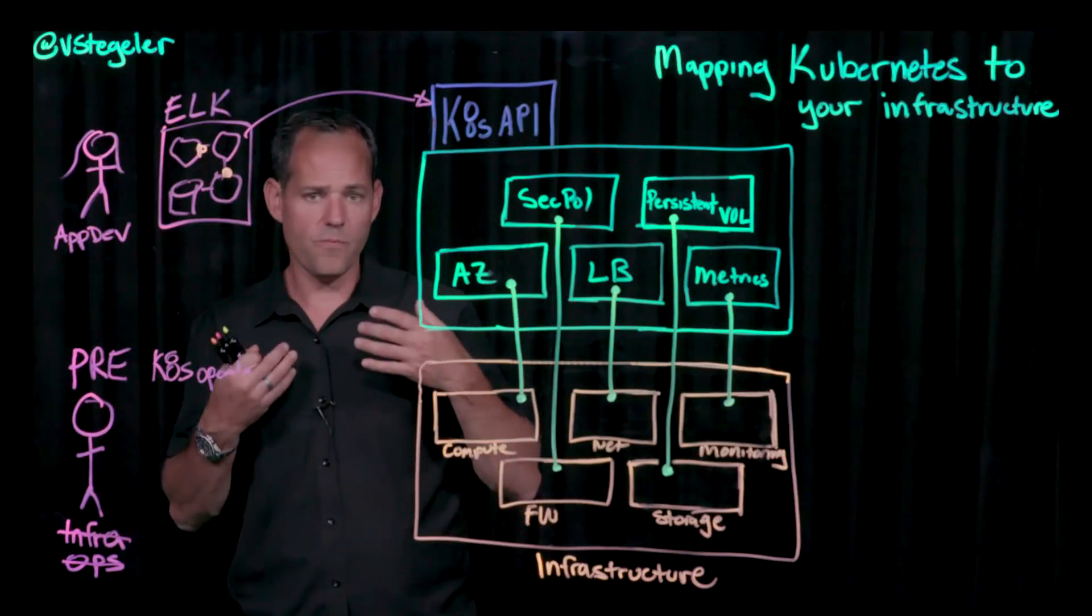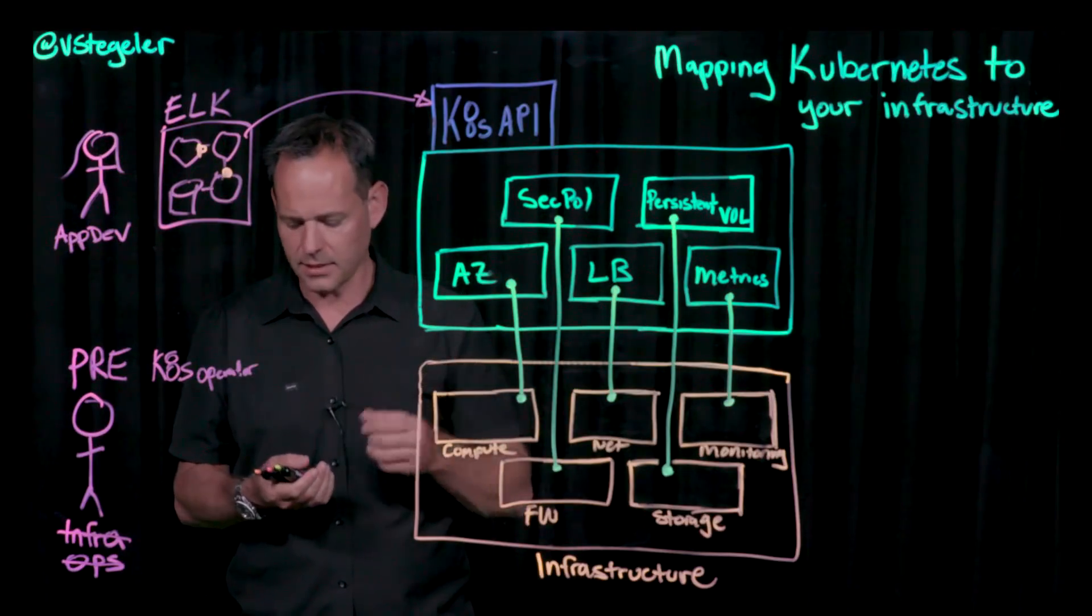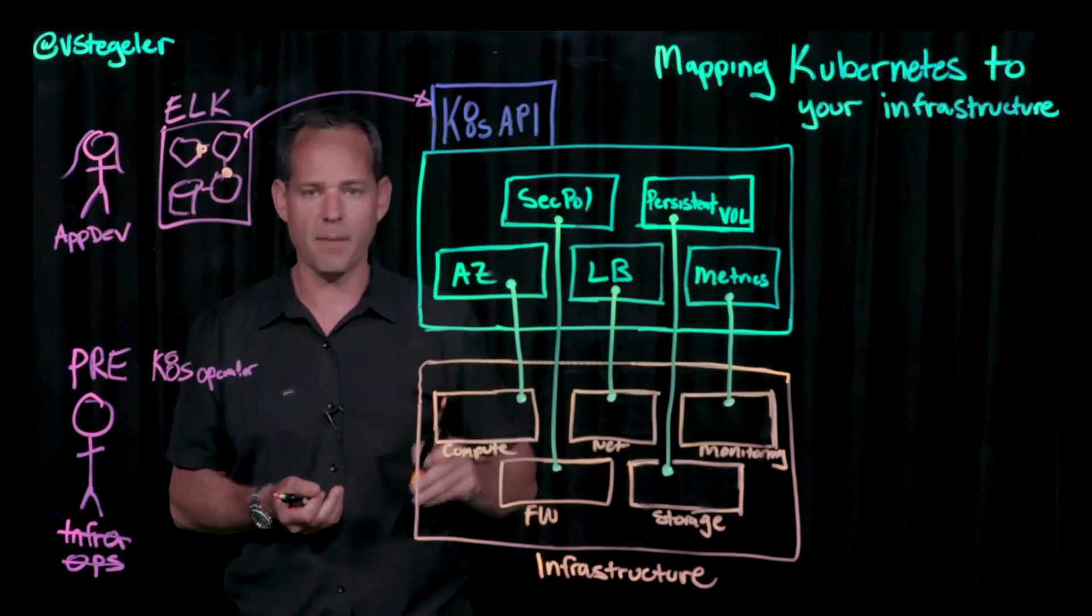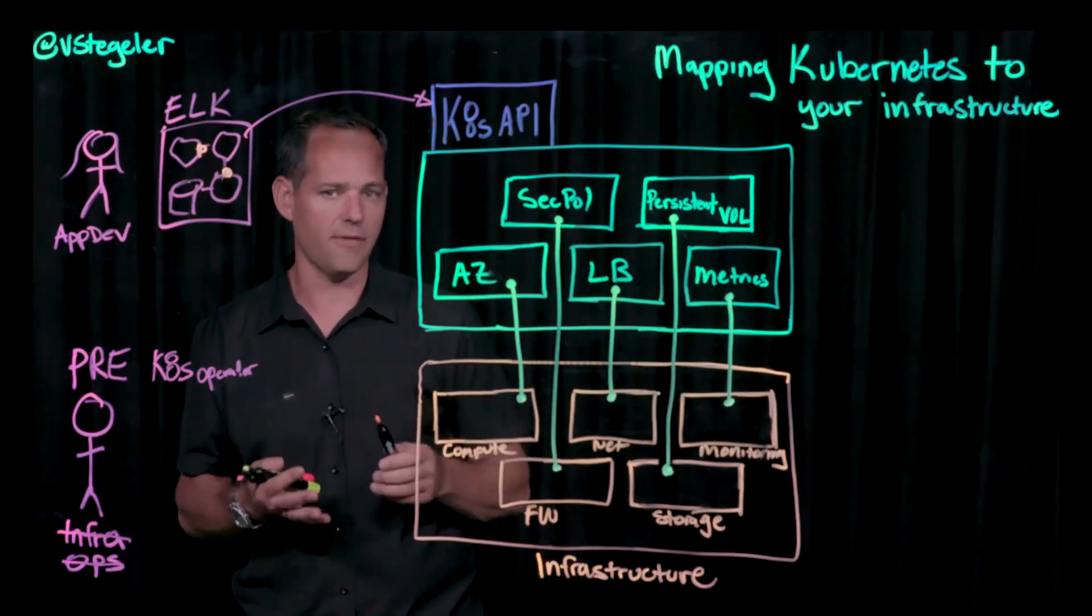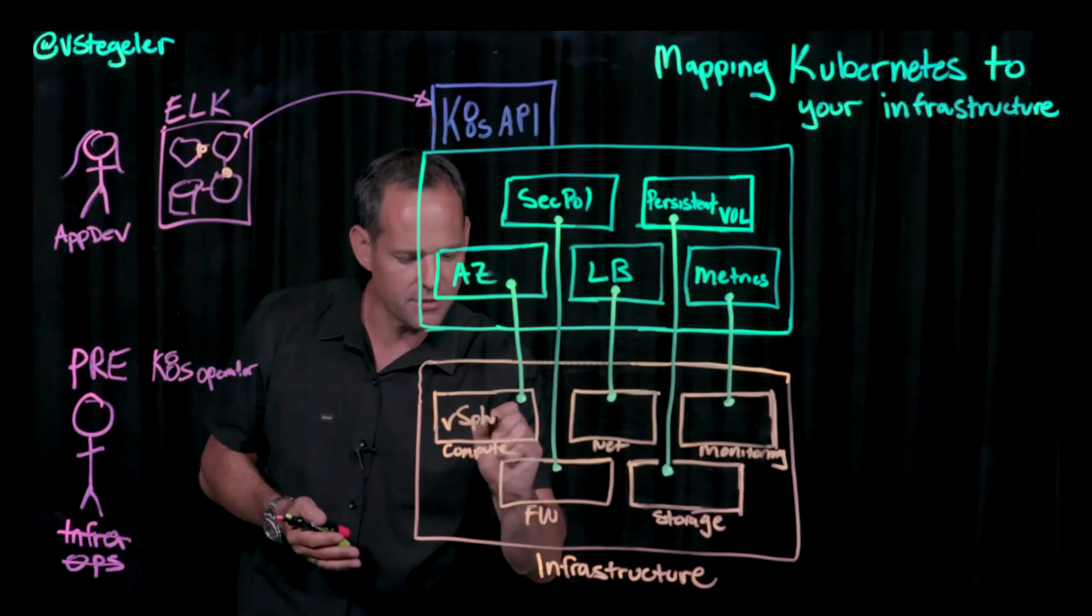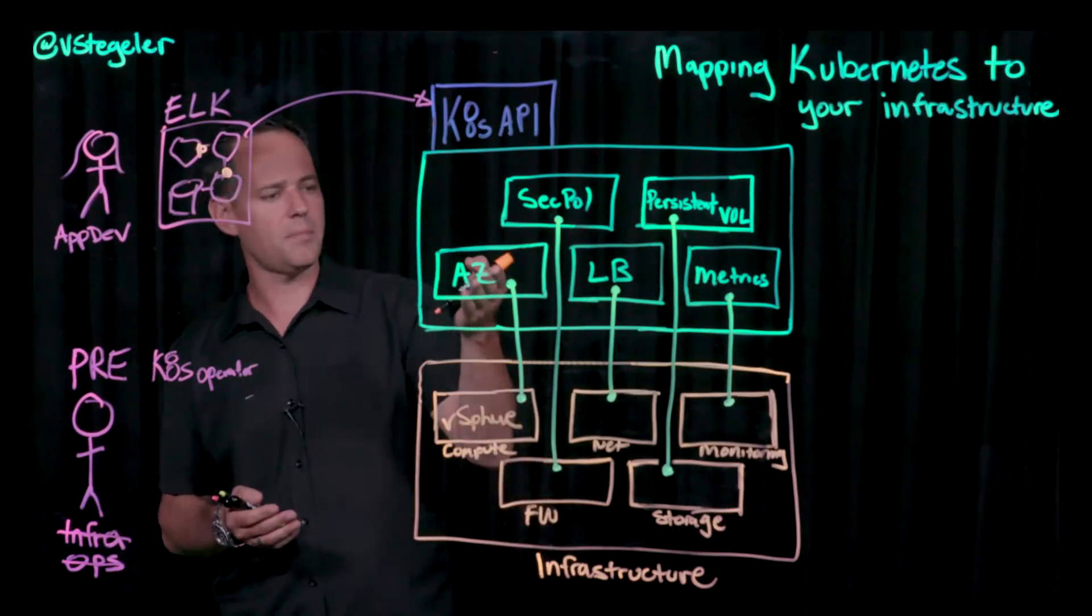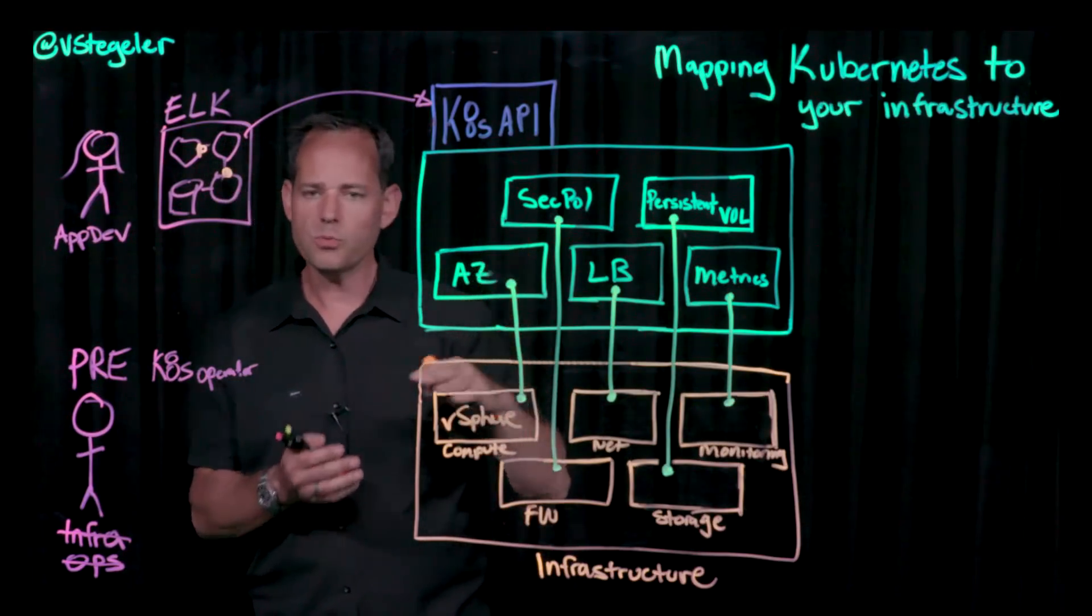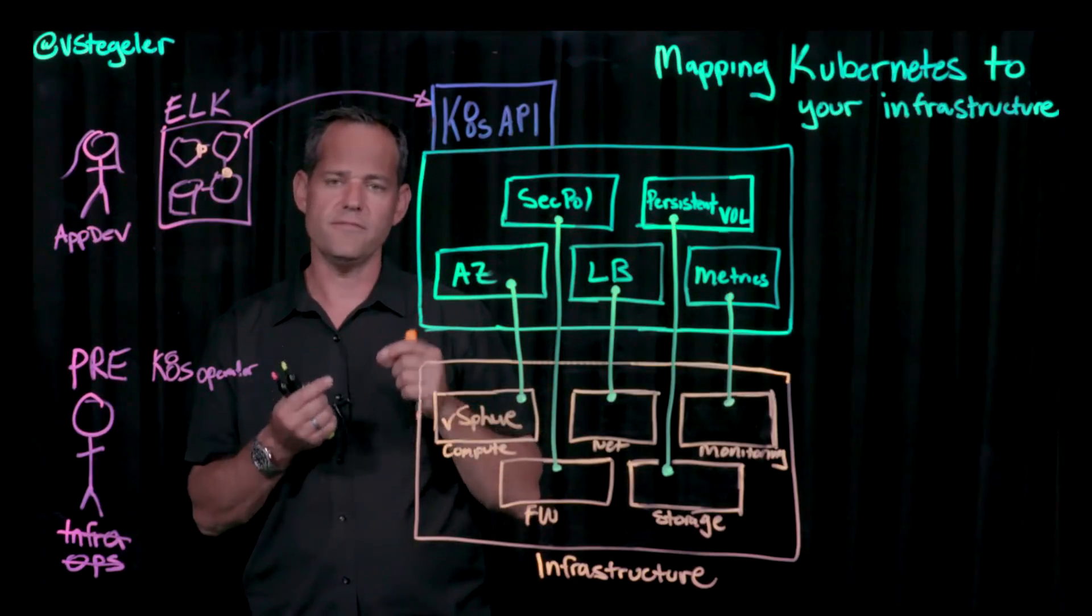Being from VMware, what I'd like to talk about is the way we map to VMware constructs and mainly the software defined data center. In this case, the compute is obviously vSphere. When I think about availability zones, those will get translated to vSphere clusters.